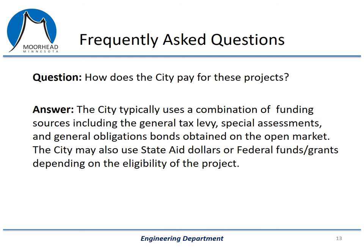How does the city pay for these projects? The city typically uses a combination of funding sources, including the general tax levy, special assessments, and general obligation bonds obtained on the open market. The city may also use state aid dollars or federal funds and grants, depending on the eligibility of the project. On a local project such as this, we wouldn't expect to see state aid dollars or federal funds and grants used. Generally, a project like this one is financed through special assessments, the general tax levy, and general obligation bonds.